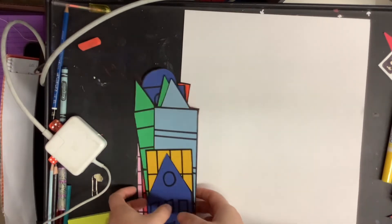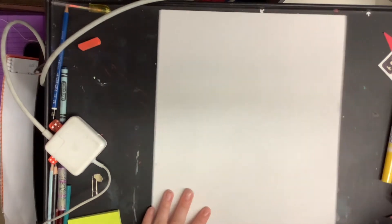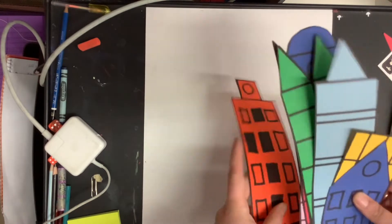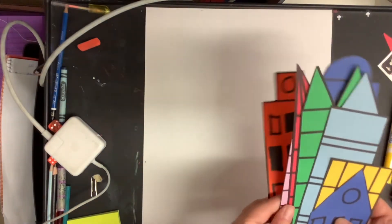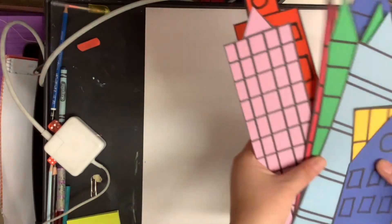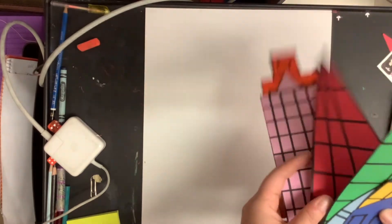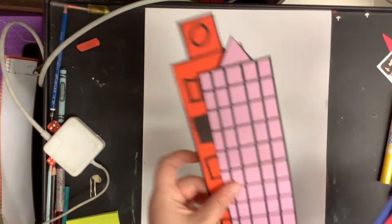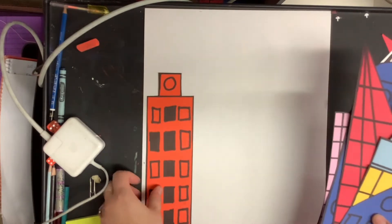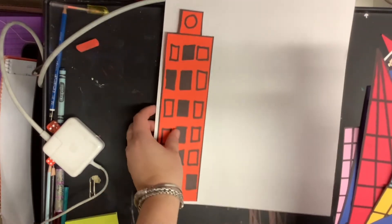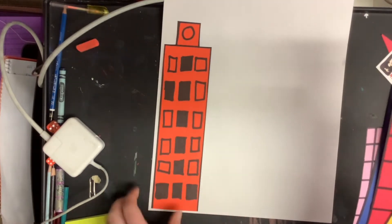So first thing you're gonna do is you're going to get your buildings and you're going to figure out the arrangement you want for them on your page. Now you want the tallest buildings in the back so I arranged mine from tallest to shortest. Mostly from tallest to shortest and there's a couple of different ways you can do this. I'm actually gonna move mine so that you can see the bottom.